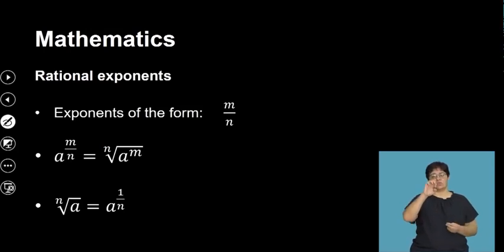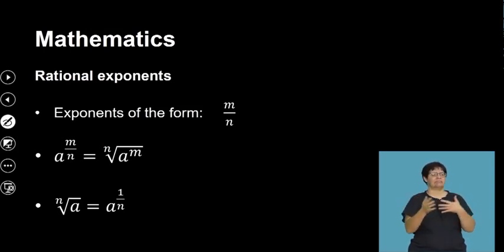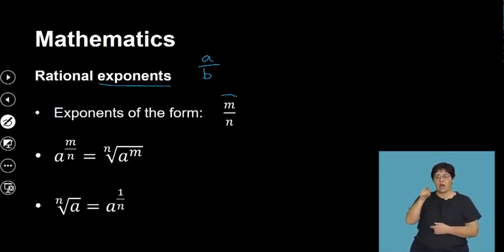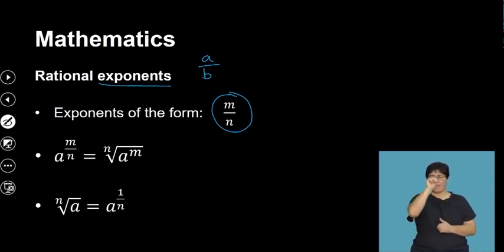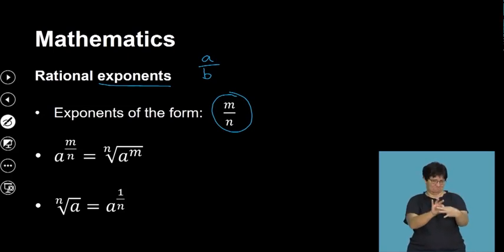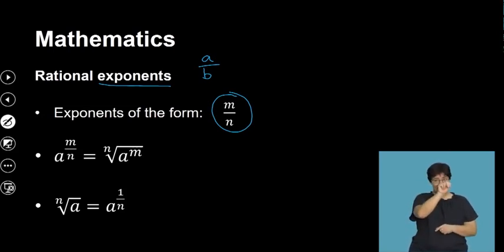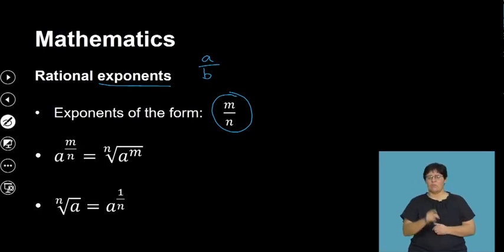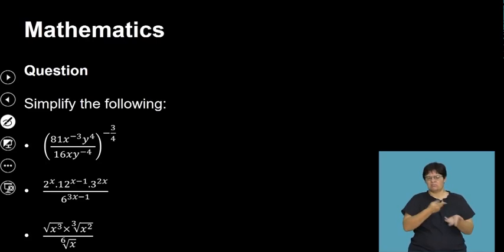We also have rational exponents. A rational number is a number that can be written in the form a over b — it can be written as a fraction. So rational exponents are exponents in the form of a fraction, which is m over n. The law is: a to the exponent of m over n equals the nth root of a to the exponent of m. And the nth root of a equals a to the exponent of 1 over n.